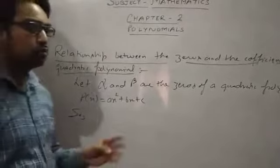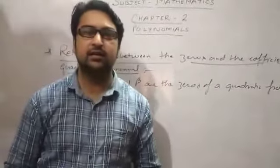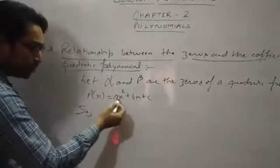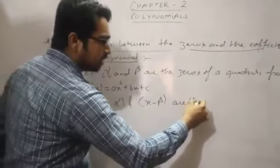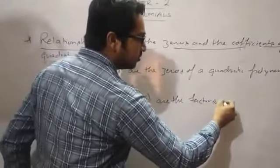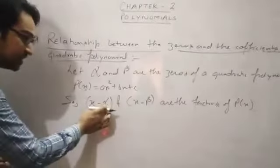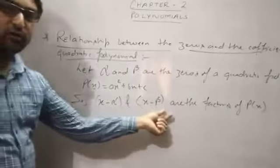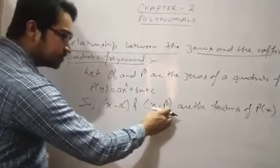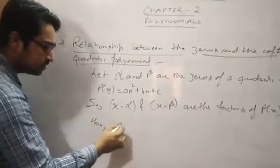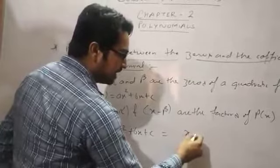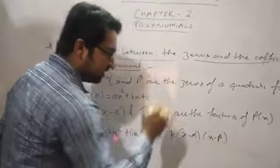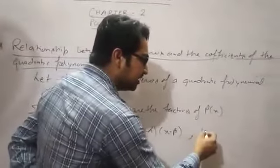Since alpha and beta are the zeros of P(x), this means that (x - alpha) and (x - beta) are the factors of P(x). Therefore, we can say that ax² + bx + c is equal to k times (x - alpha)(x - beta), where k is a constant.